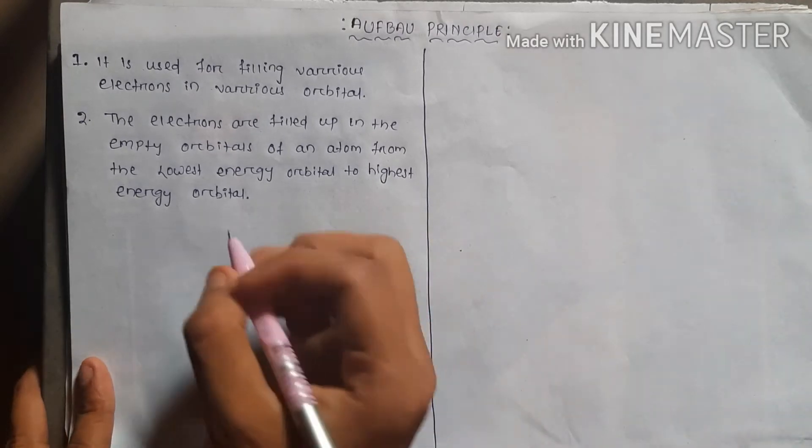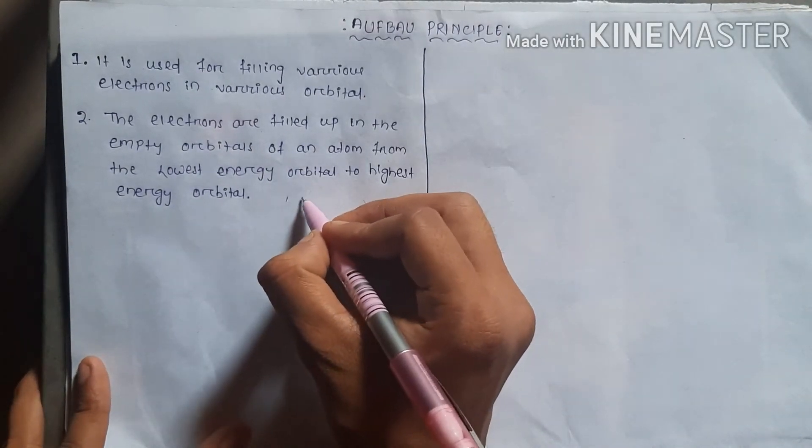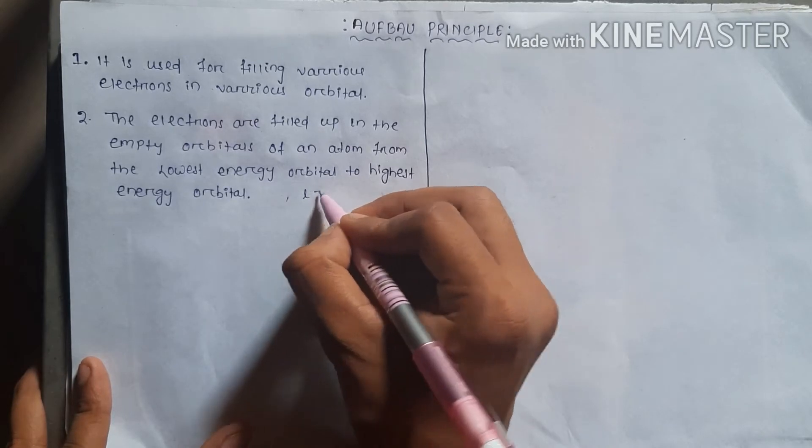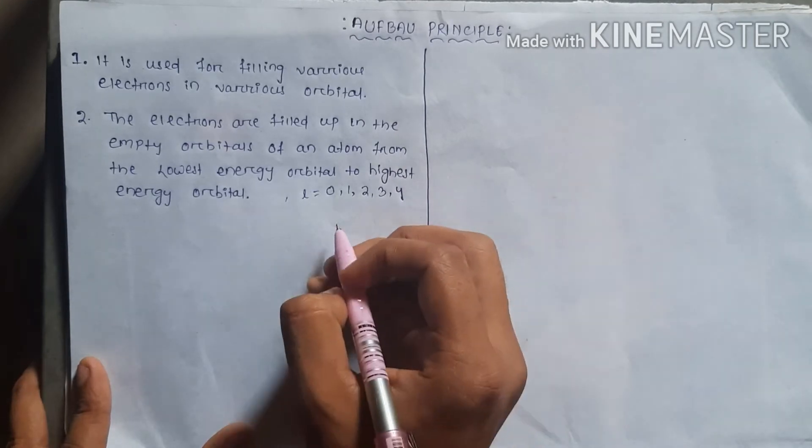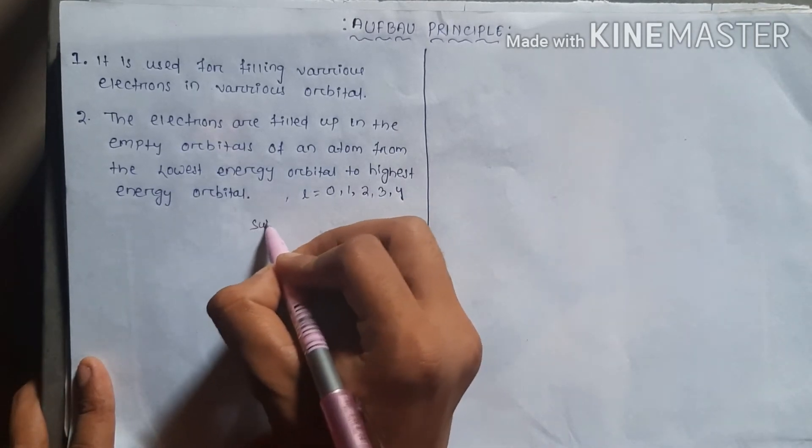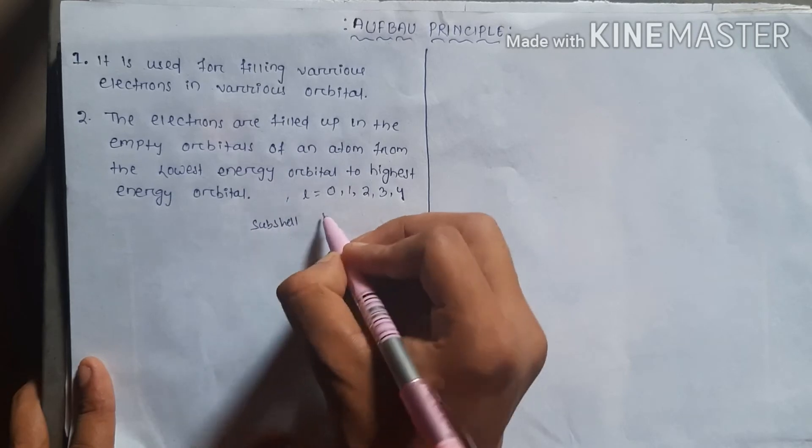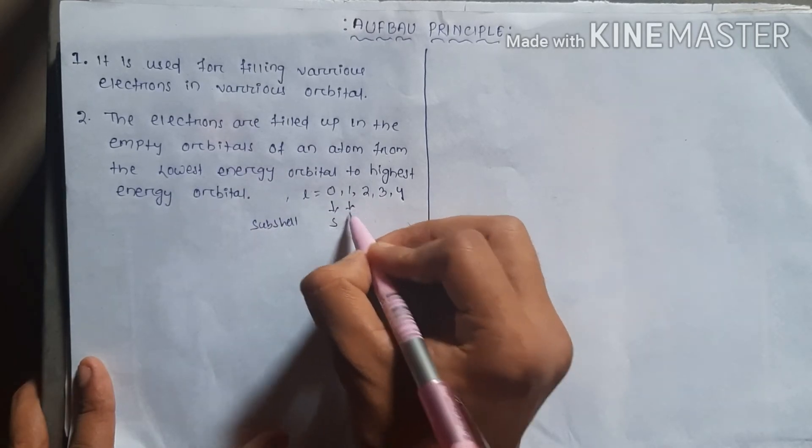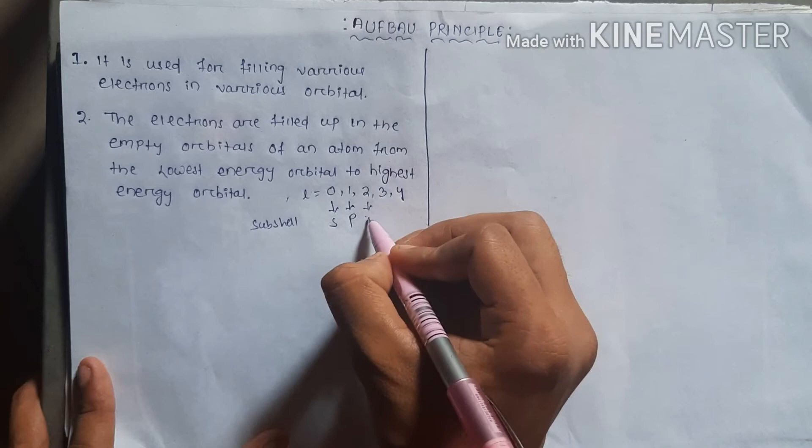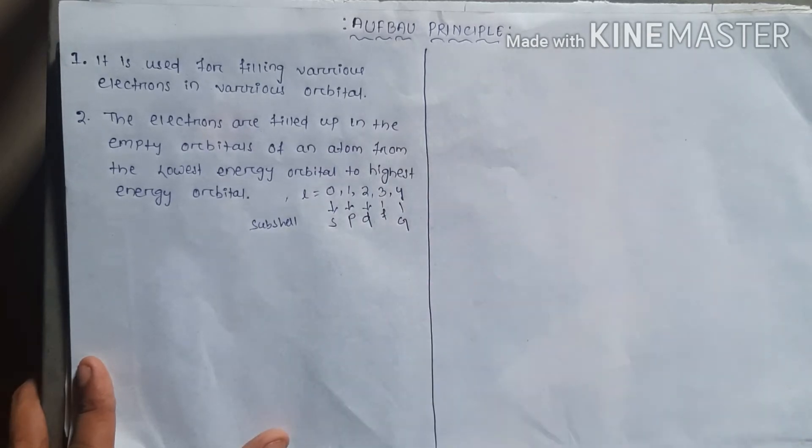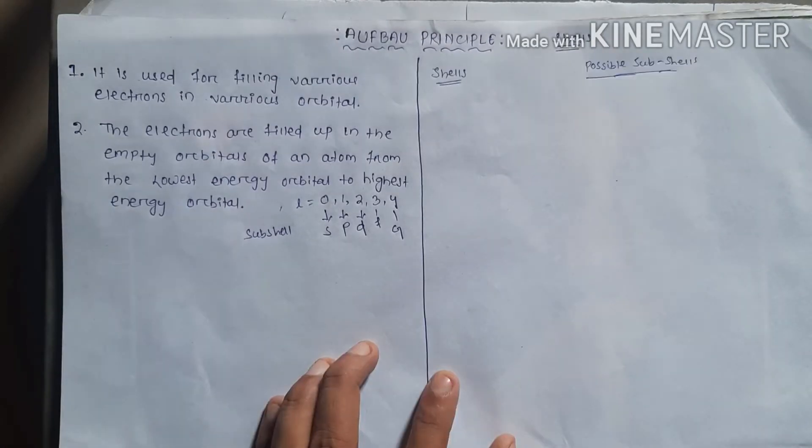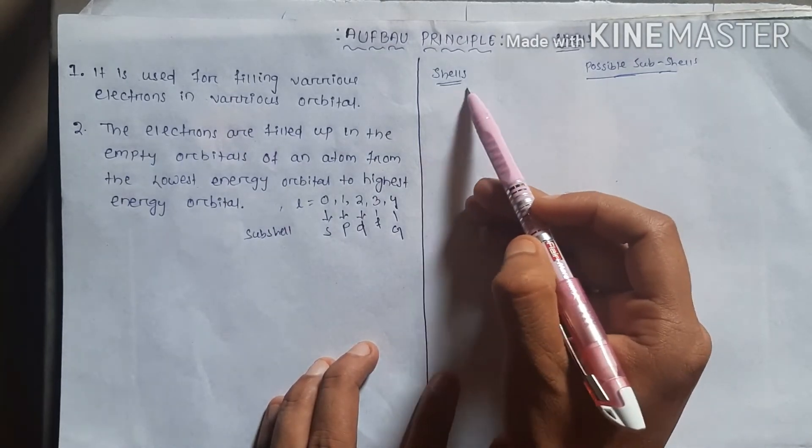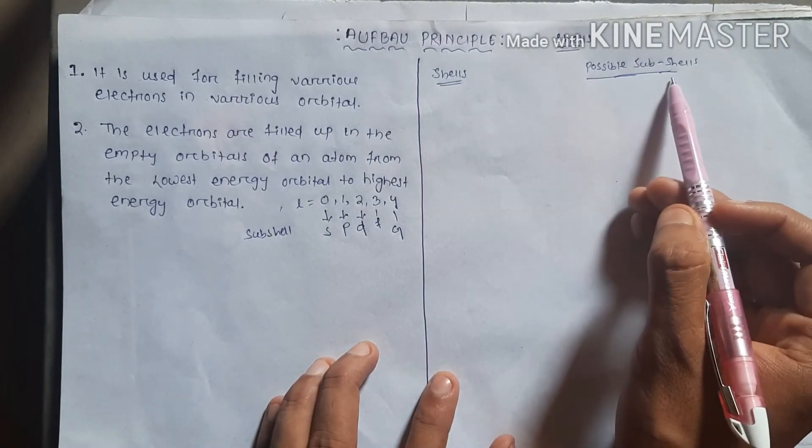L equals 0, 1, 2, 3, 4. These are subshells. So whatever the subshells: for L=0 it's S, for L=1 it's P, for L=2 it's D, for L=3 it's F, then G. Now we see here the shell and here are some possible subshells.